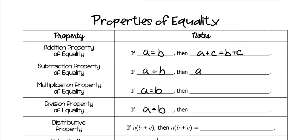Same thing for subtracting. So in other words, if you have an equation that looks like this and you need to subtract two from both sides to solve for X, that is using the subtraction property of equality.